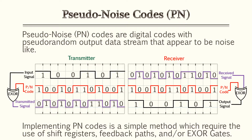I mentioned pseudo noise codes but didn't really explain what they mean. Pseudo noise codes are digital codes with pseudo-random output data streams that appear to be noise-like. When transmitting and receiving data, you want to encrypt it — using a pseudo noise code as your encryption encoder and decoder. You'll need that sequence to encode at the transmitter and a receiver with that same sequence to decode it.